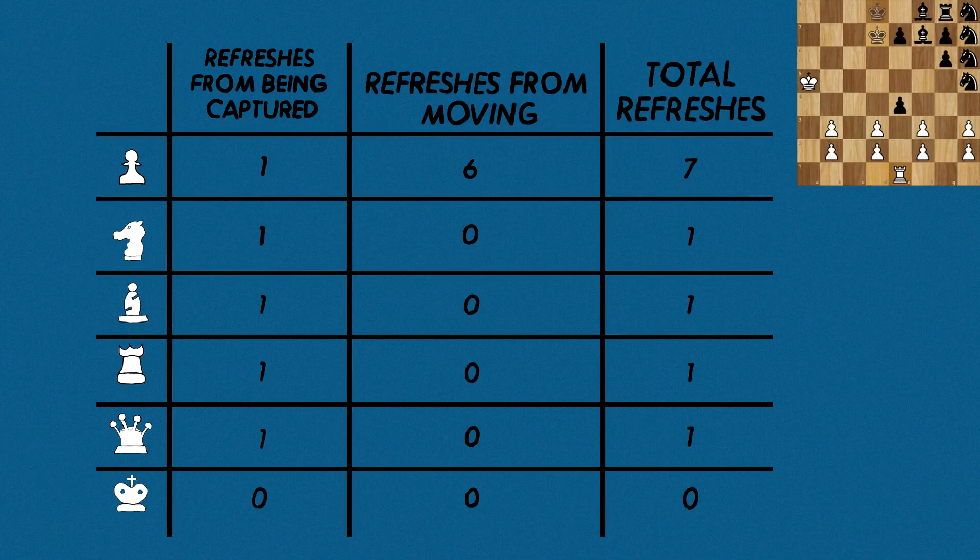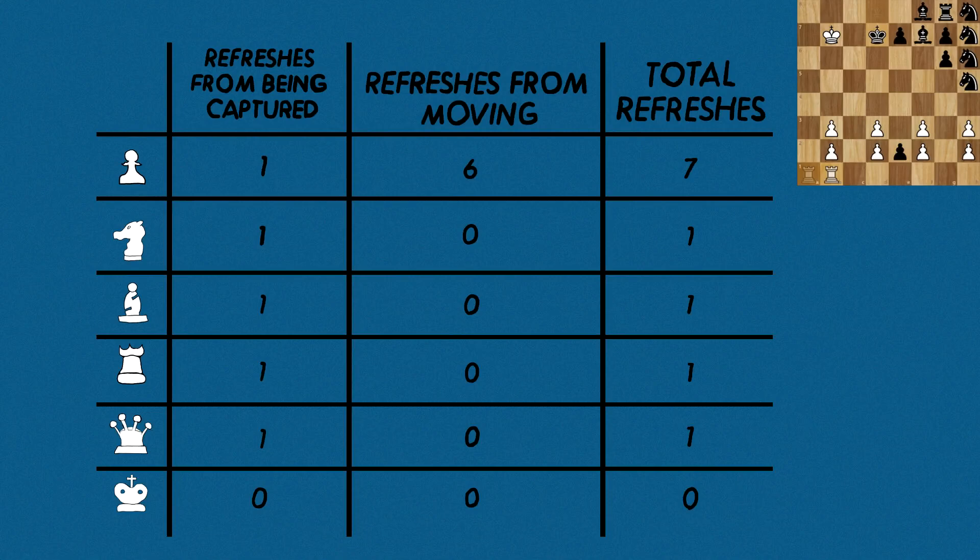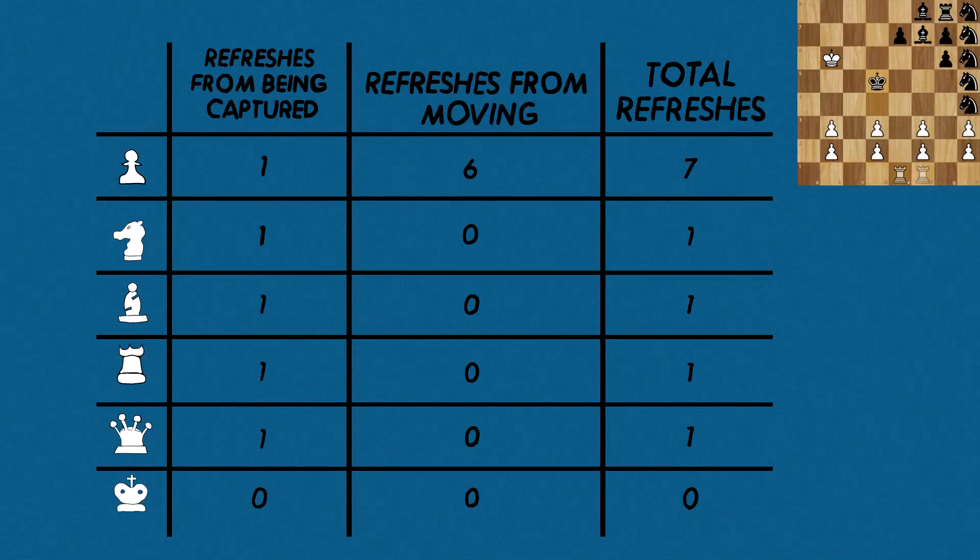When other pieces are captured, they offer one refresh of the 50 move rule. But pawns offer seven. They can move six times, and then one more when they are captured.